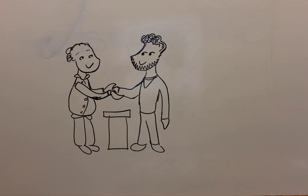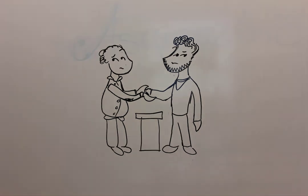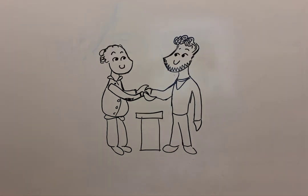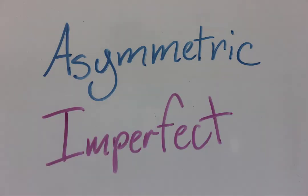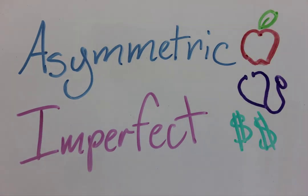Imperfect information is where either the buyer, the seller, or both are less than 100% certain about the qualities of what they are buying and selling. Now let's give you some examples of asymmetric and imperfect information in goods, labor, and financial service markets.